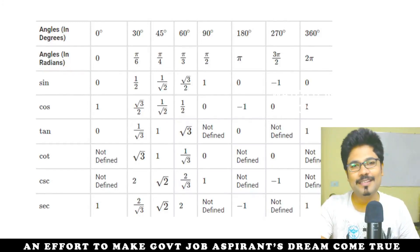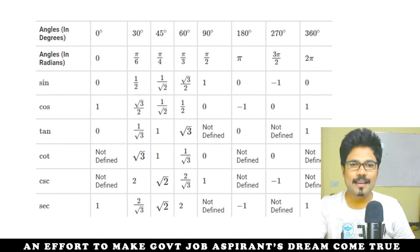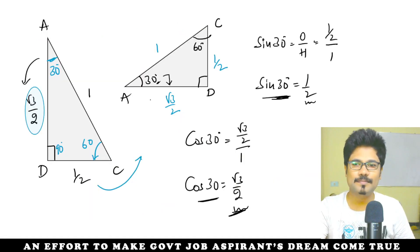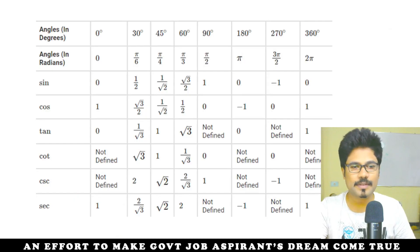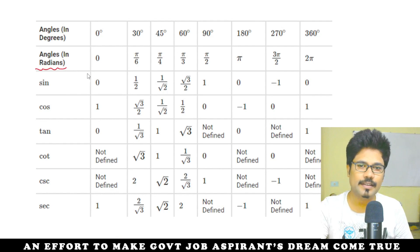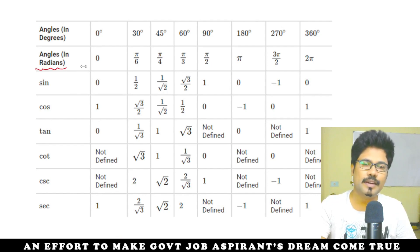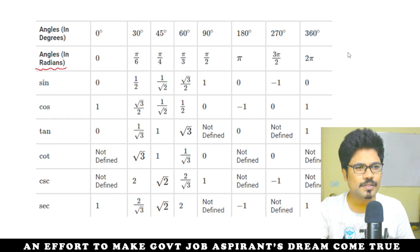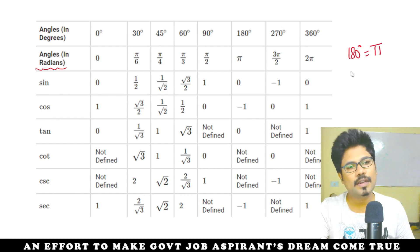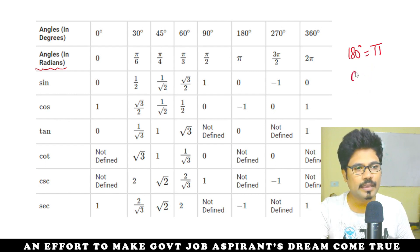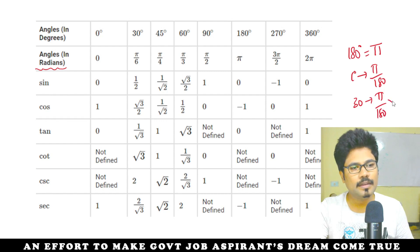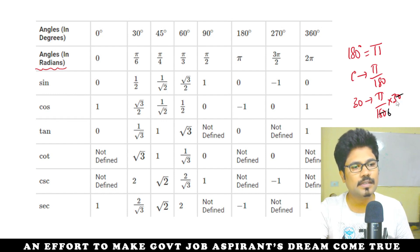Hello guys, welcome to the trigonometry third session. Last class we looked at this table. Now, don't worry about angles and radians. To convert degrees to radians, 180 degrees is equal to pi. So 1 degree equals pi by 180. Therefore 30 degrees equals pi by 180 into 30.